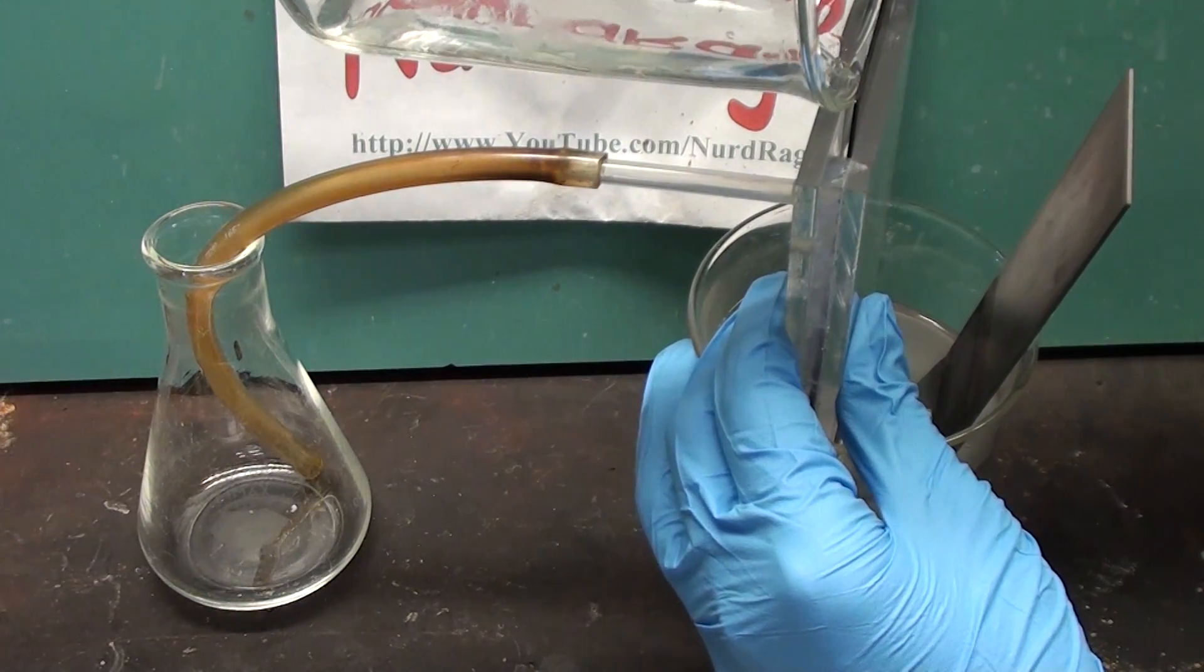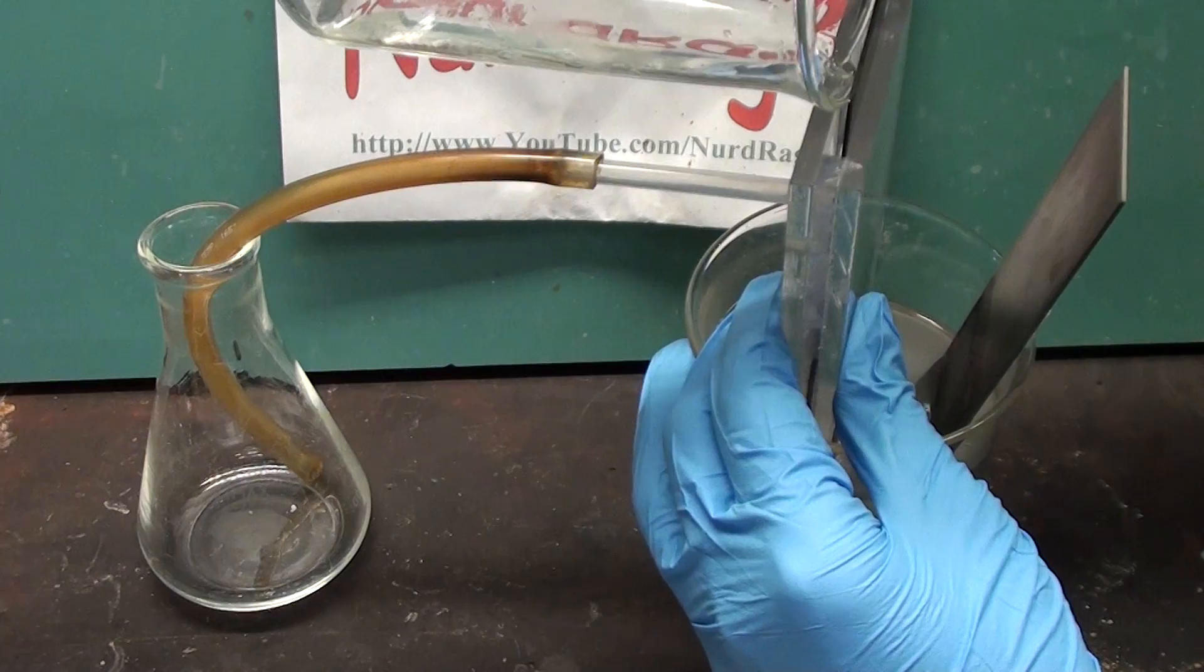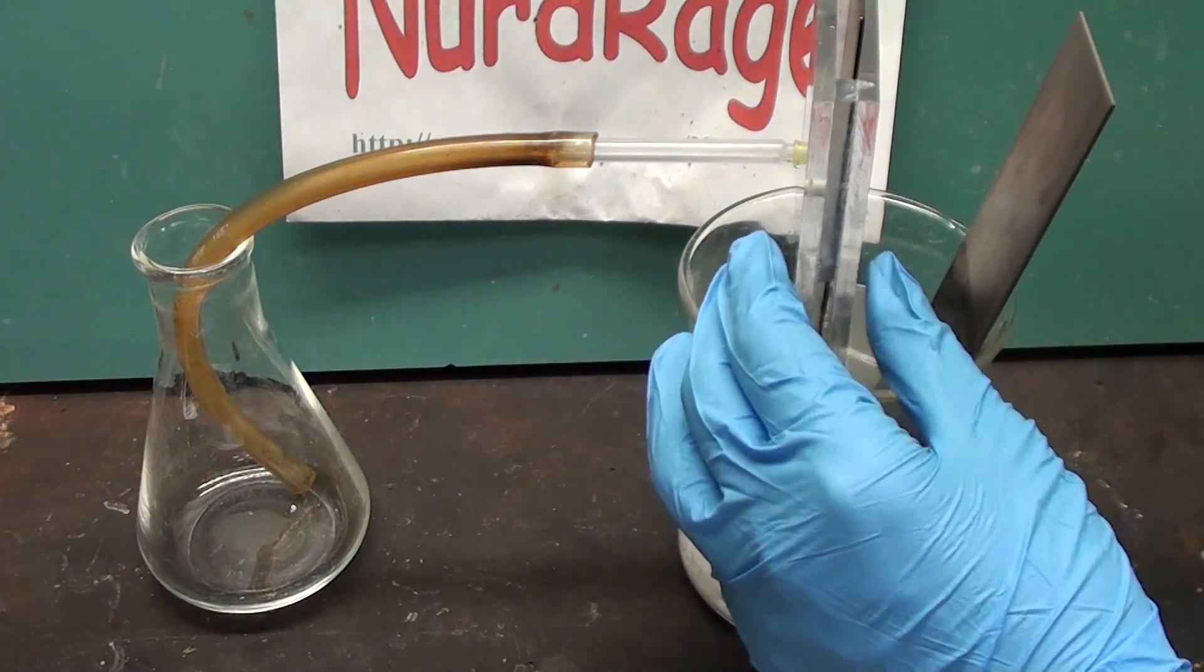But if you find the resistance of the whole setup too high at first, you can add in a few grams of sodium hydroxide or bicarbonate yourself to start it up. More will flow in as the electrolysis progresses.